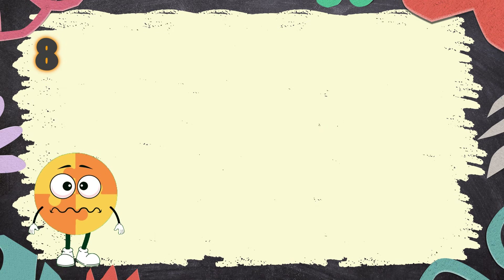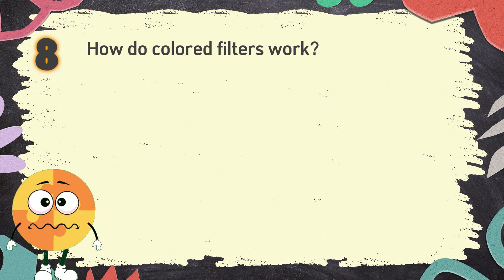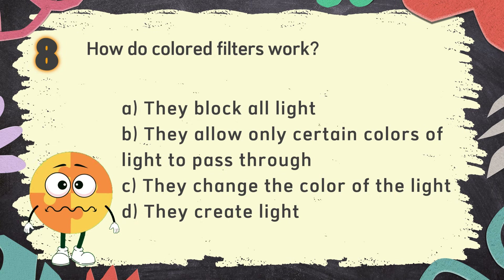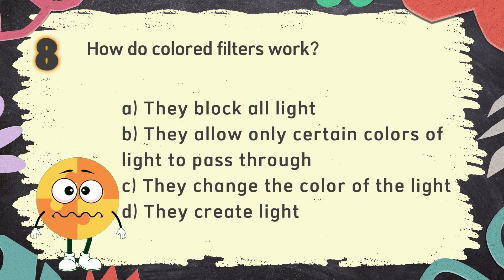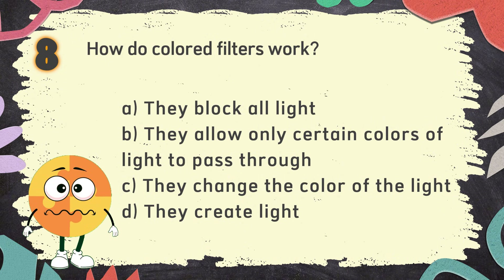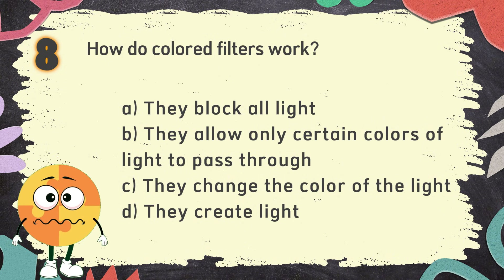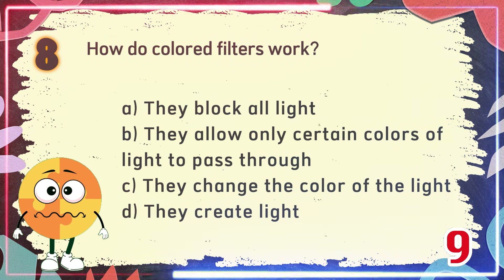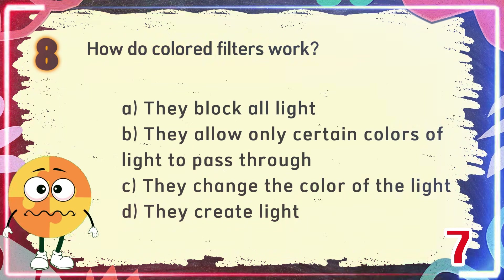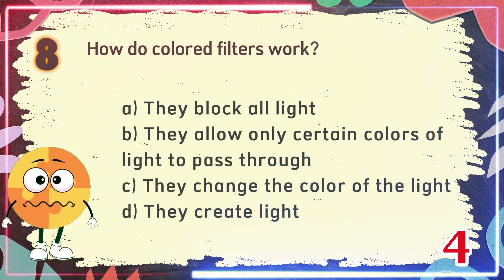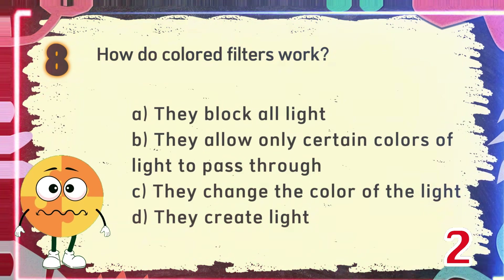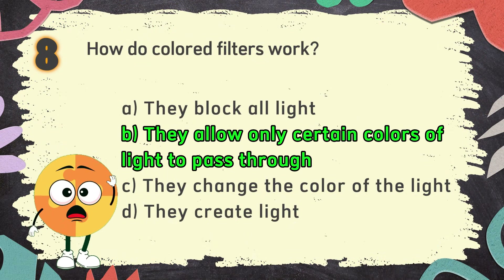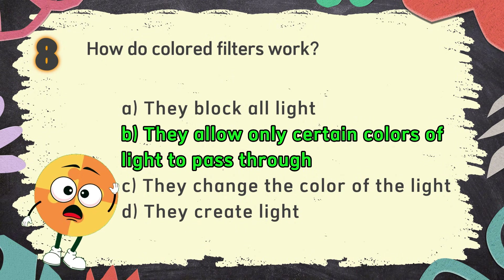Number 8. How do colored filters work? The choices are: A. They block all light, B. They allow only certain colors of light to pass through, C. They change the color of the light, D. They create light. The correct answer is B: They allow only certain colors of light to pass through.